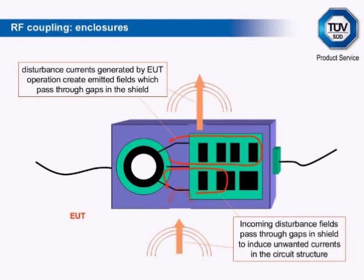The extent of the interaction is determined by the geometry and size of the conductors, with long or widely separated tracks and wires coupling greater amounts of energy into or out of the system. A shielded enclosure reduces this interaction, but no shield is perfect, and gaps or apertures in the conductive surface of the shield will allow fields to penetrate in both directions, coupling with the whole of the contents of the enclosure but particularly with structures close to the gap.